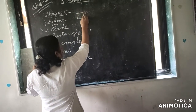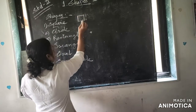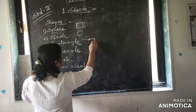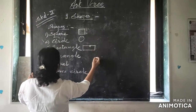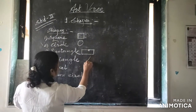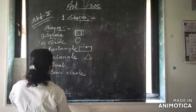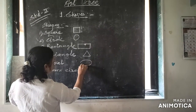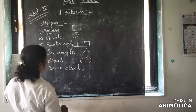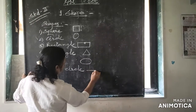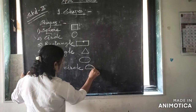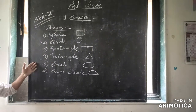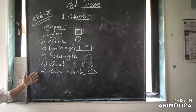You already know the shapes of square, circle, rectangle, and oval — which looks like this one — and then semi-circle. So in total, 6 shapes we have here.